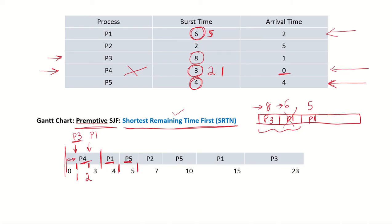At time 5, another process arrives: P2. The burst time of P2 is 2, and the remaining time for P5 — which has already run for one time unit — is 3. Comparing 3 with 2, P2 is the shortest job. So P2 will be given the CPU, P5 is put in the ready queue with remaining time of 3, and P2 starts executing with a burst time of 2.